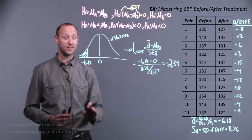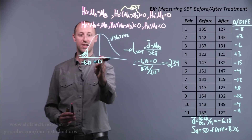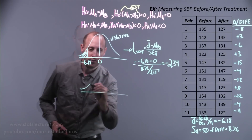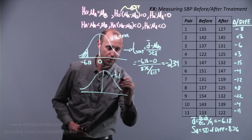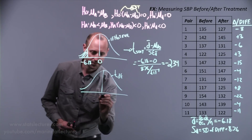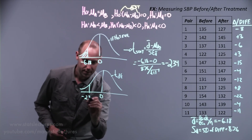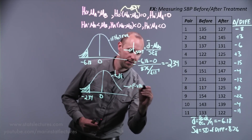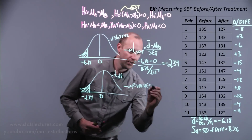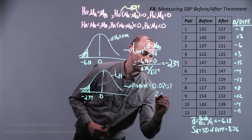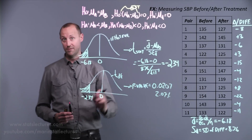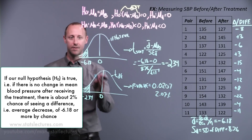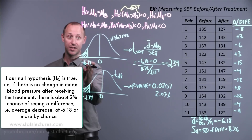Once we've calculated this test statistic, it follows a t-distribution with N-1 degrees of freedom. The sample estimate is 2.34 standard errors below the mean we'd expect if the null is true. Finding this value from a t-table or software, the p-value comes out to approximately 0.0207, or 2.07%. If the null hypothesis is true — no change in average blood pressure after treatment — there's only about a 2% chance of seeing an average decrease of 6.18 or more by chance.